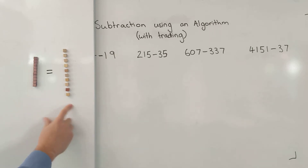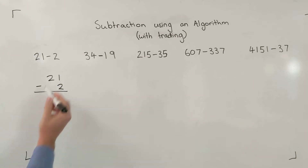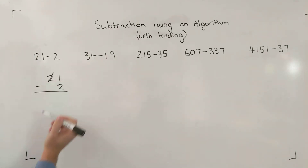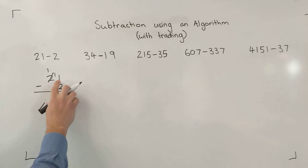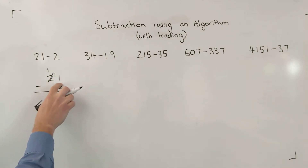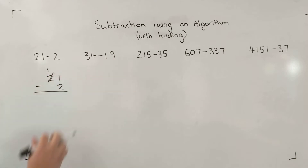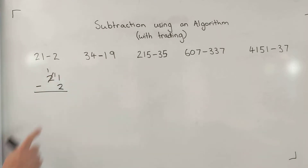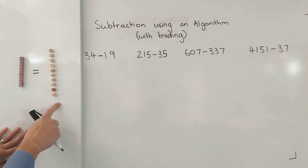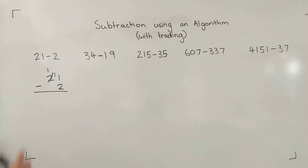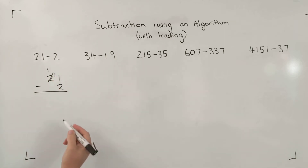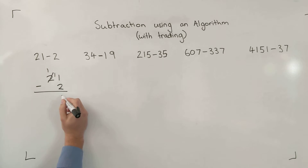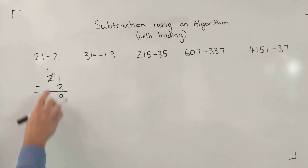One long is the same as 10 ones. So if I took one from the tens column, there would only be one left, because I've taken one away and brought it down to the ones column. Now this one in my ones column is actually 11, because it was the one that was already there plus the extra 10 that I traded from my tens column. So 11 take away 2 — I can now do this subtraction: 11 take away 2 is 9.